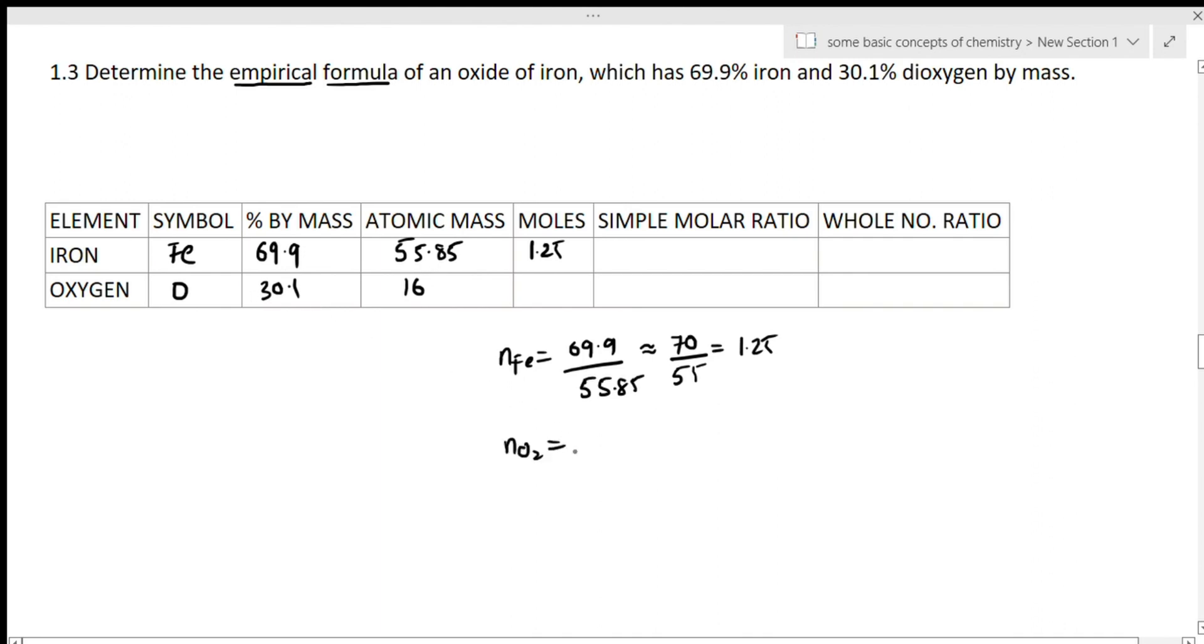Now moles of oxygen: given mass is 30.1% and atomic mass is 16. Approximately 30 upon 16 is 1.88.